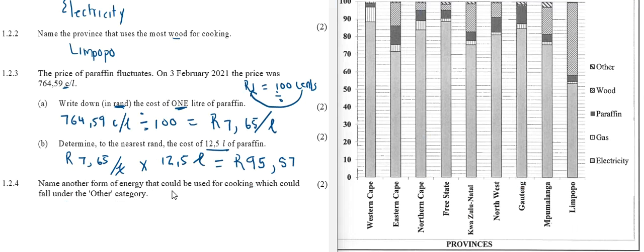Question 1.2.4: Name another form of energy that could be used for cooking which could fall under the other category. We've got electricity, gas, paraffin, wood. What else could be used for cooking? Coal could also be used for cooking.